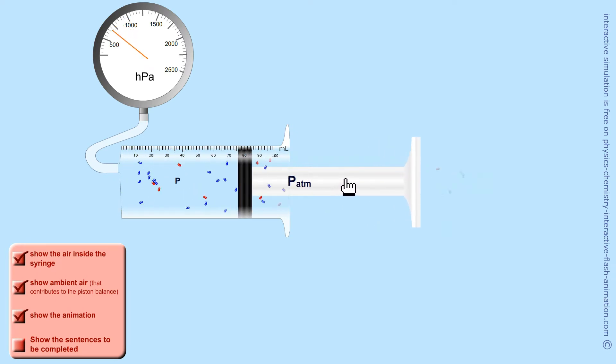If I move the piston away from its equilibrium position, the volume increases and the molecules inside move further apart. Their number has not changed.